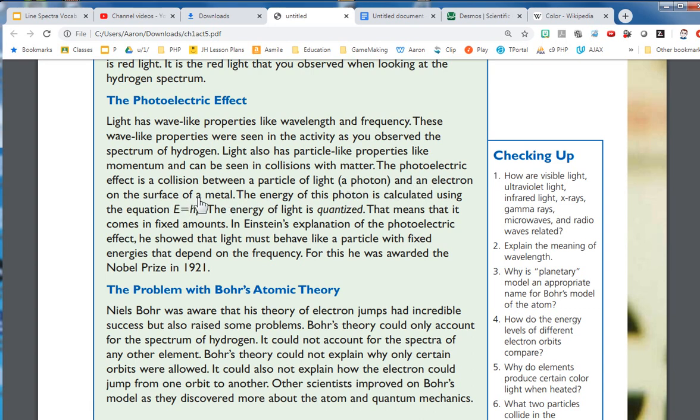The photoelectric effect is a collision between a particle of light, a photon, and an electron on the surface of a metal. The energy of this photon is calculated using the equation E equals HF. The energy of light is quantized. That means that it comes in fixed amounts. It can be one, or it can be two, or it can be three, but it can't be anything in between. You can't have part of a light packet or part of a photon. In Einstein's explanation of the photoelectric effect, he showed that light must behave like a particle with fixed energies that depend on the frequency. For this, he was awarded the Nobel Prize in 1921.